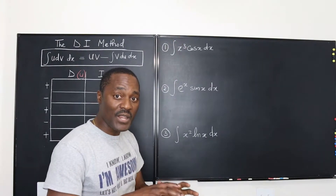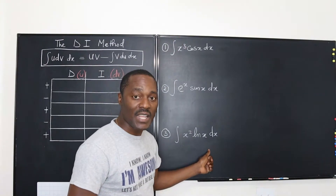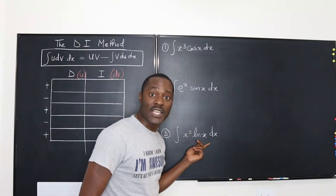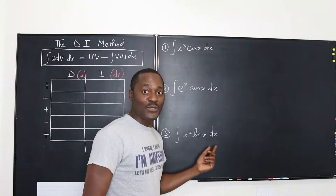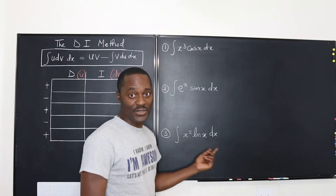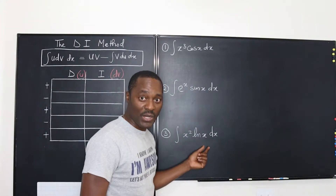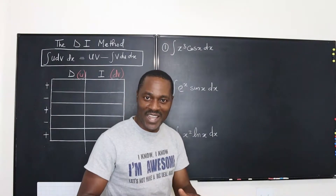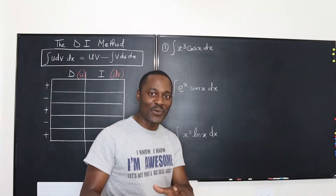Except if you have a combination of a polynomial and a natural log function — because you cannot integrate natural log, you'll have to differentiate the natural log and you now start integrating the polynomial, and somehow it always works out. And I'm going to show you how that works out.